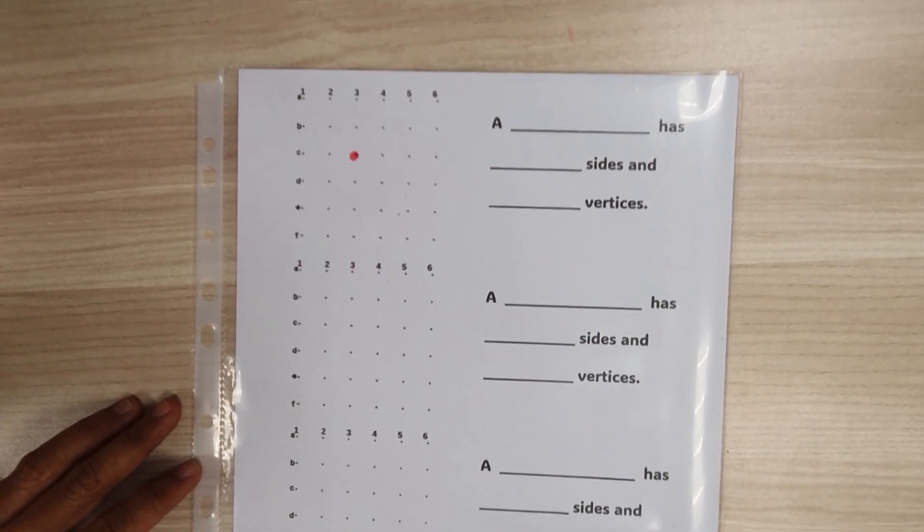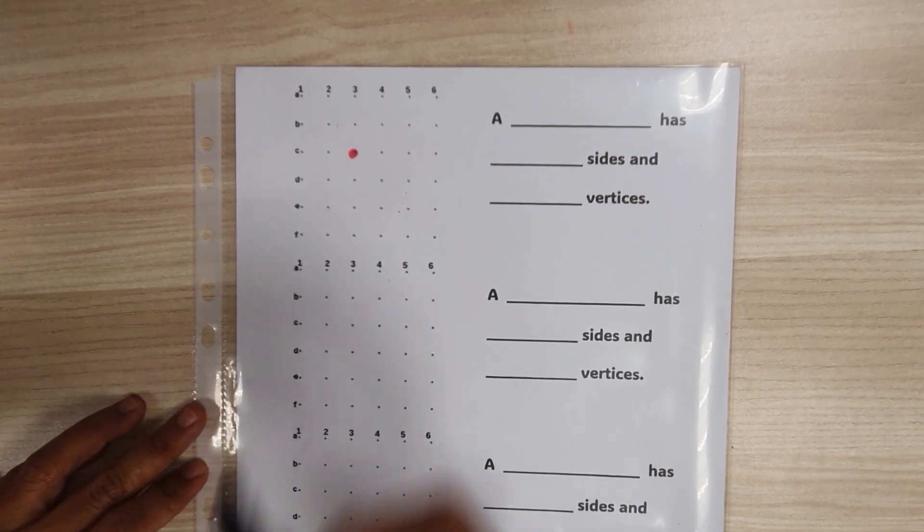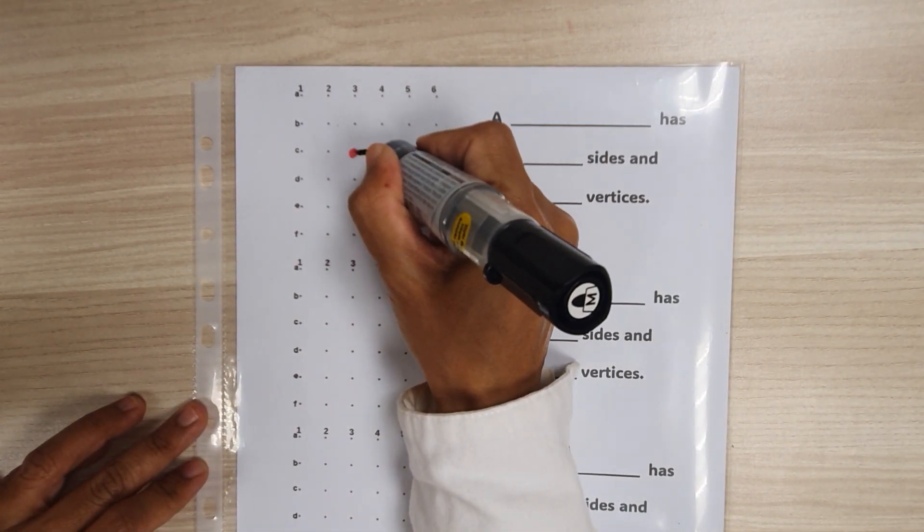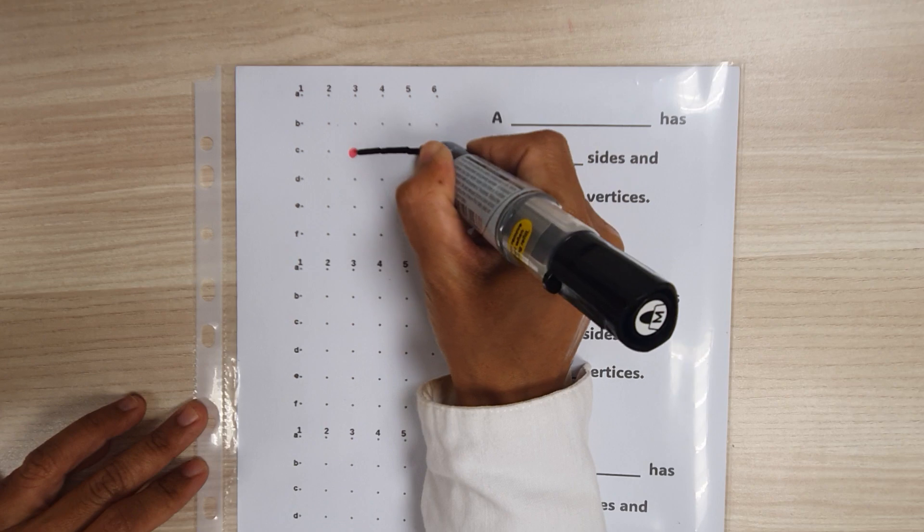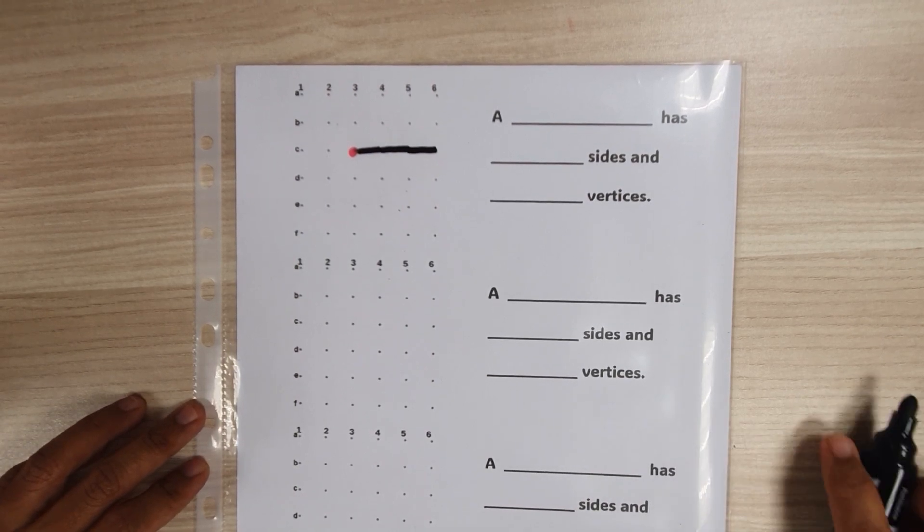Let me draw one side of the square first. I'm going to count the spaces. One, two, three. One side of my square will be three spaces long.